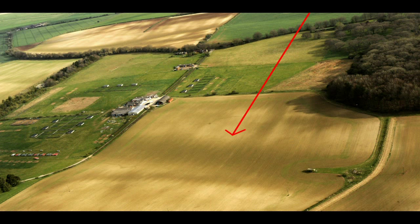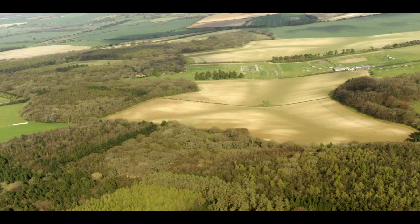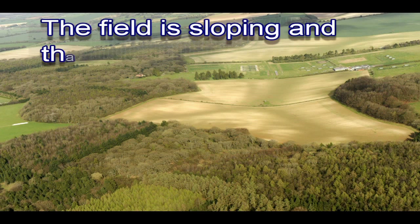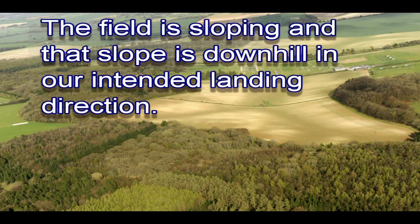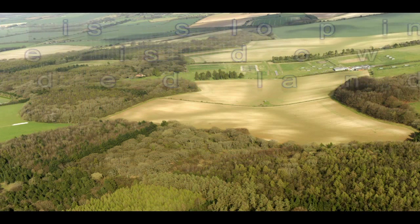But before we make an approach we are going to fly around the field, maintaining enough distance from it to enable us to view the field at an angle. As we approach the end of our leg we will look back to see the field from a different angle. And now we can see quite clearly that the field is sloping, and that slope is downhill in our intended landing direction.